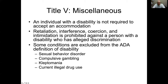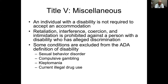Title Five — miscellaneous provisions — includes the rule that an individual with a disability is not required to accept an accommodation. Watch the 'Ramp of Hope' video and you'll understand why that statement matters. Also under Title Five, retaliation, interference, coercion, and intimidation against a person with a disability who has alleged discrimination is prohibited. So if someone reports a coworker, they cannot be retaliated against or intimidated for making that allegation.